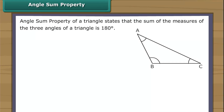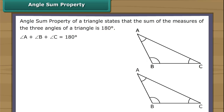The angle sum property of a triangle states that the sum of the measures of the three angles of a triangle is 180°. In the figure, angle A plus angle B plus angle C equals 180°. Let us now prove this property.